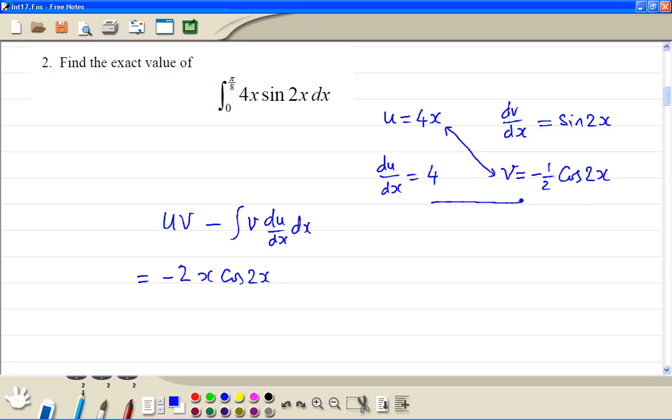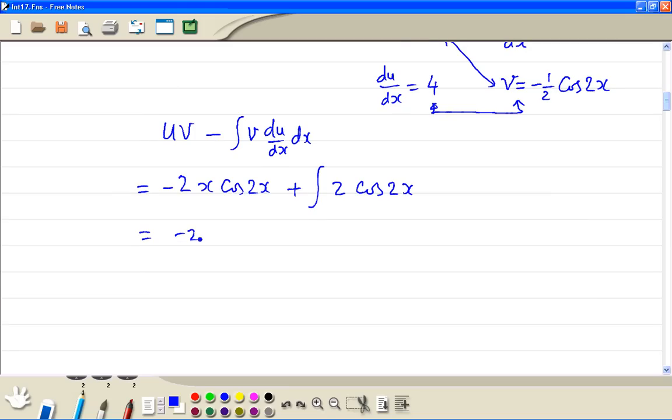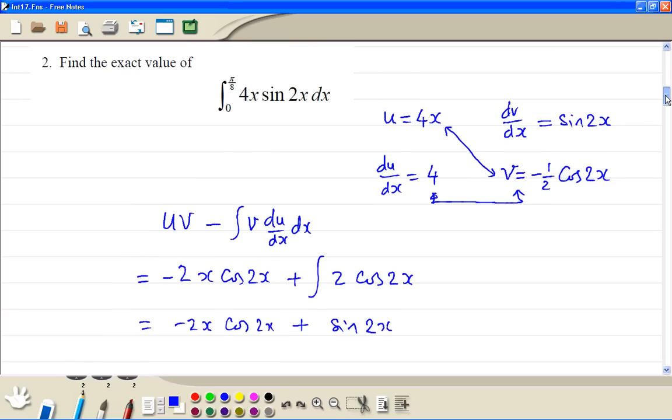Then when we multiply these two together, we've got a minus sign from the formula and we have a minus sign here that makes it plus, giving us 2 cosine 2x. So we have minus 2x cosine 2x. Integration of this gives sine 2x then divide by 2, so 2 cancels. Now we can put the limits.